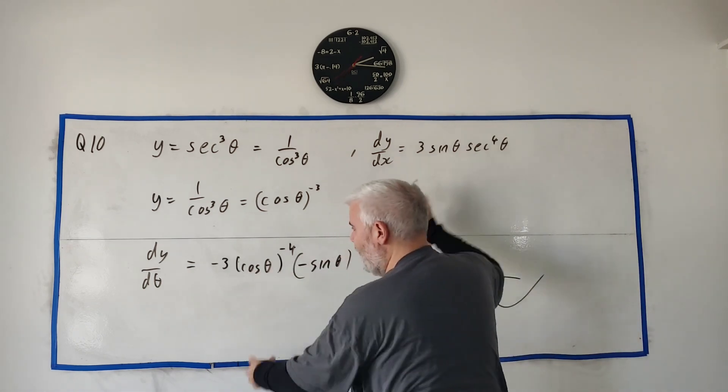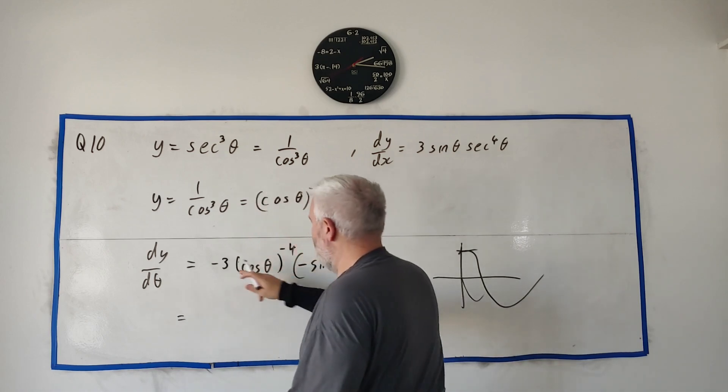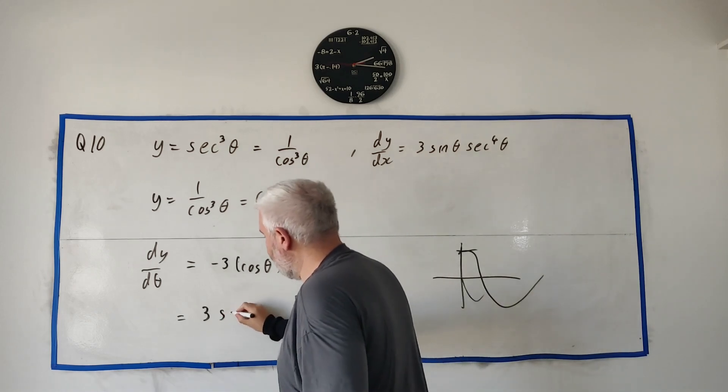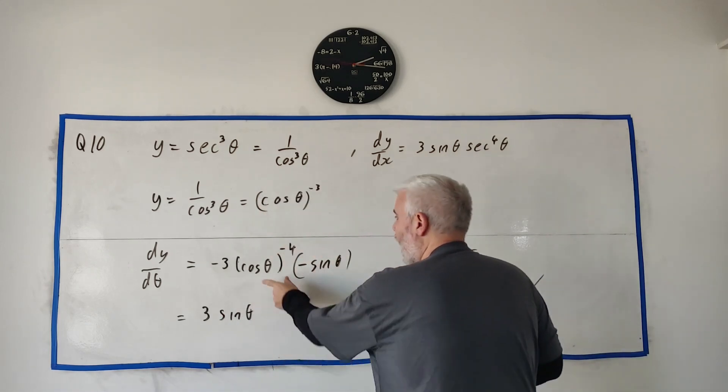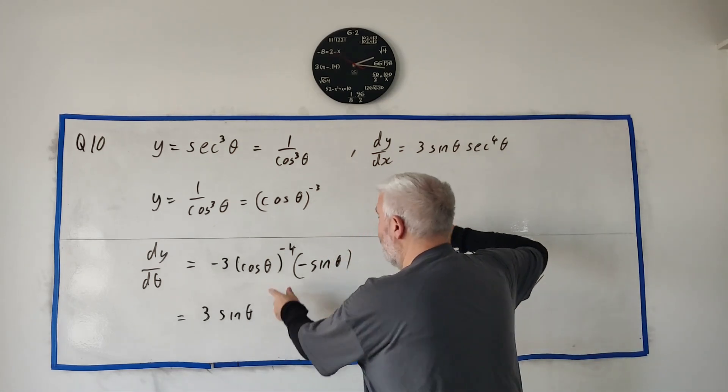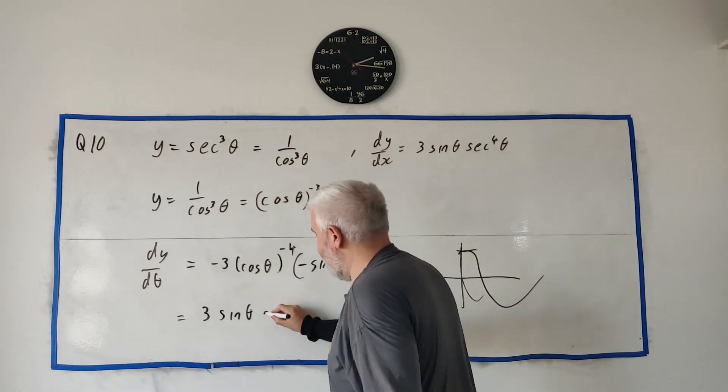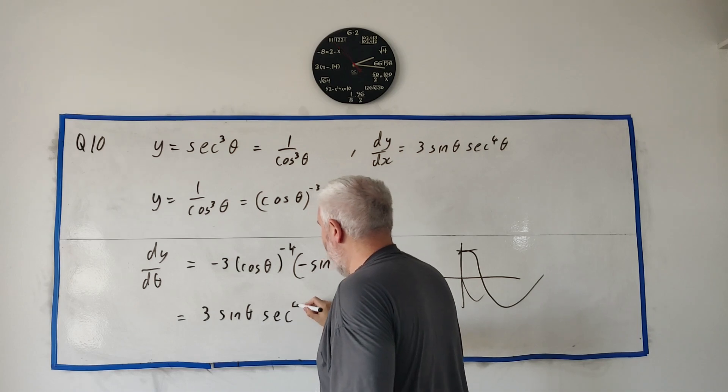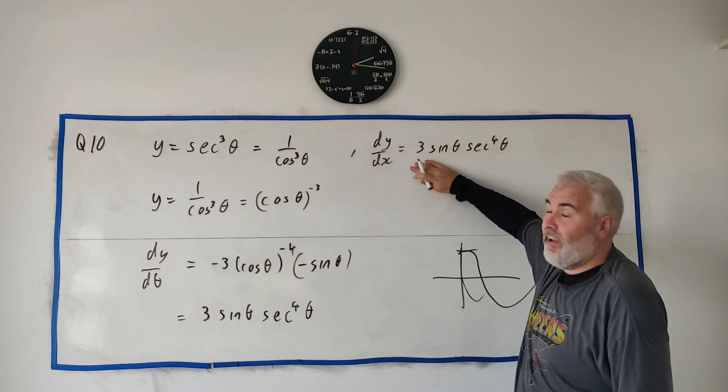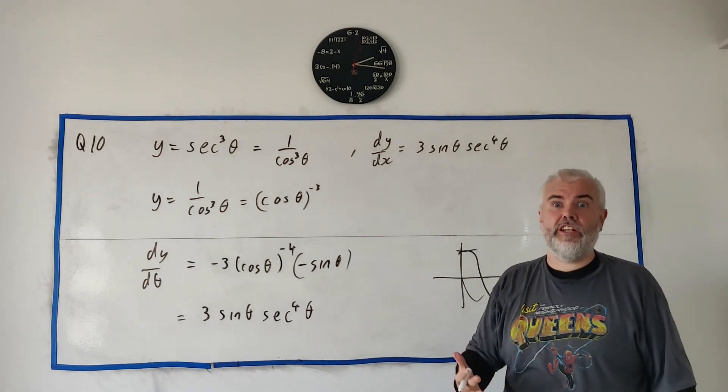Putting this all together, we get the answer. Minus by minus is plus 3 sine theta, and 1 over cosine to the power of 4 is secant to the power of 4. That's the answer for part A, which wasn't that difficult. They're making sure we have this to do part B, which is a lot more difficult.